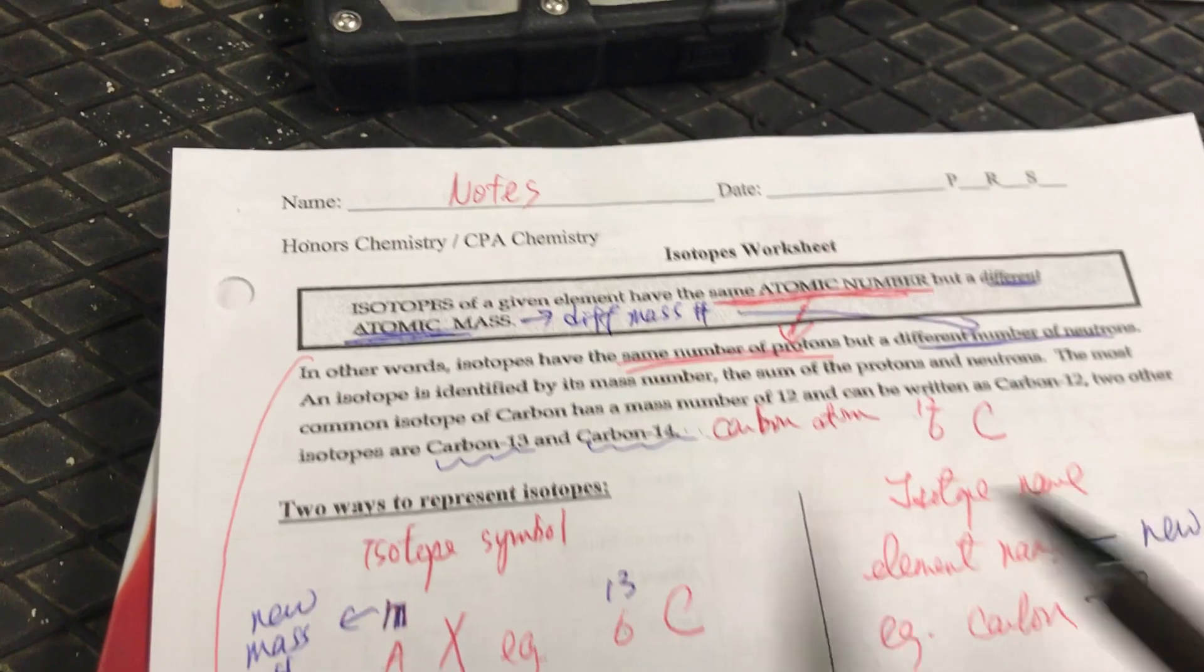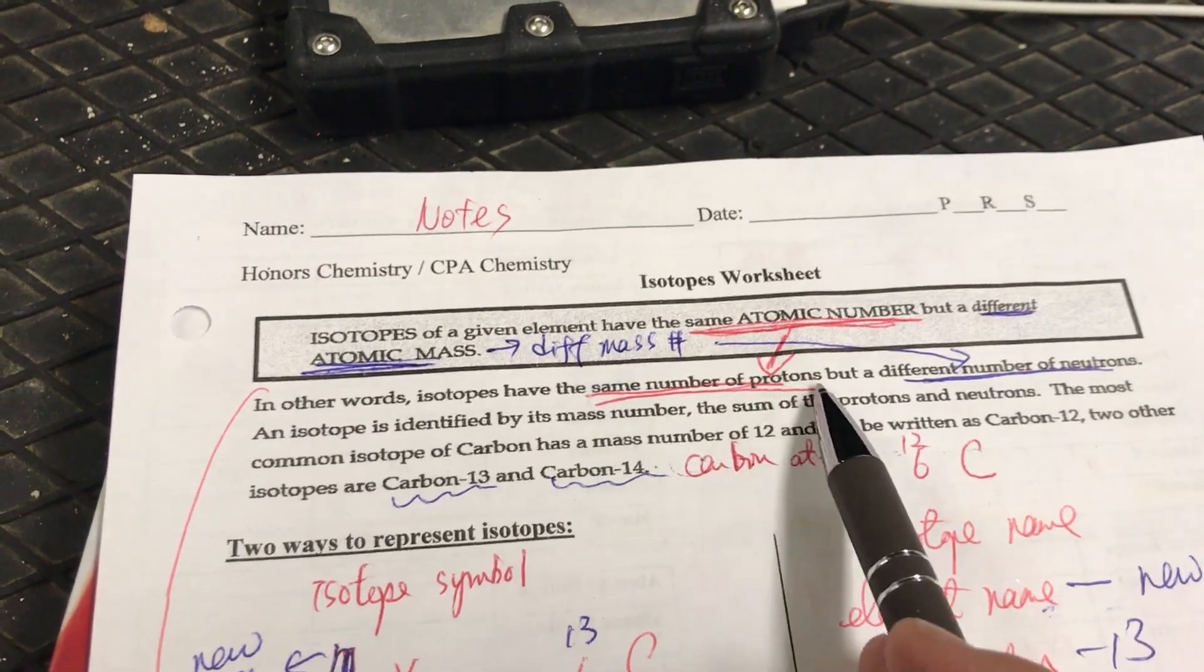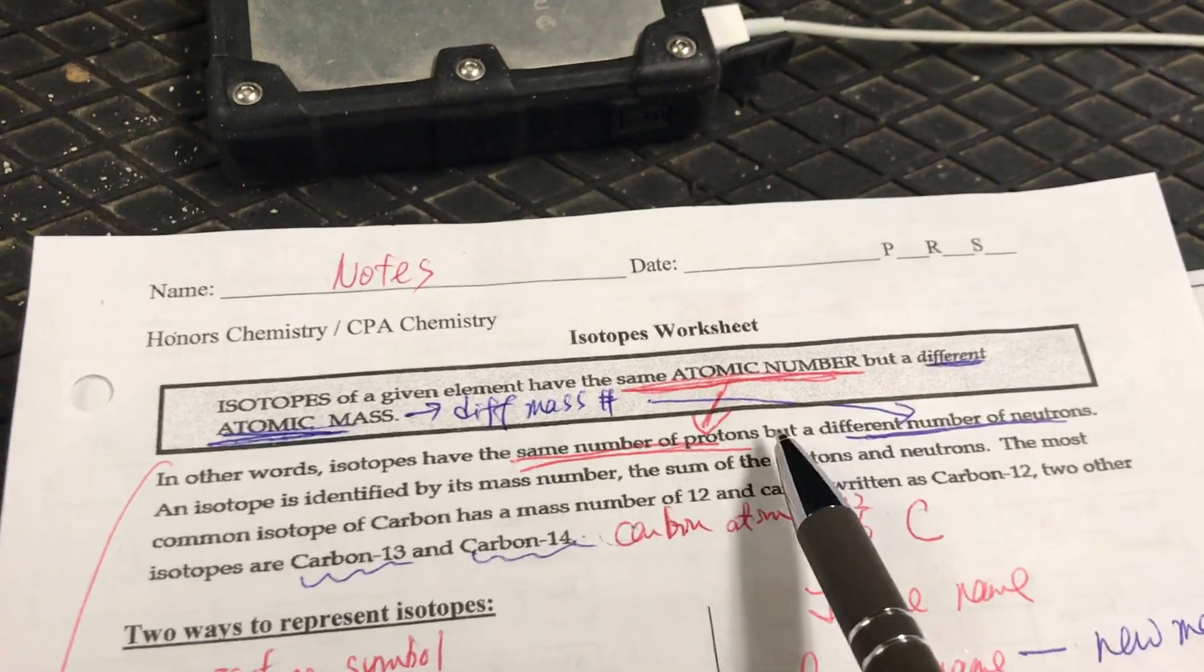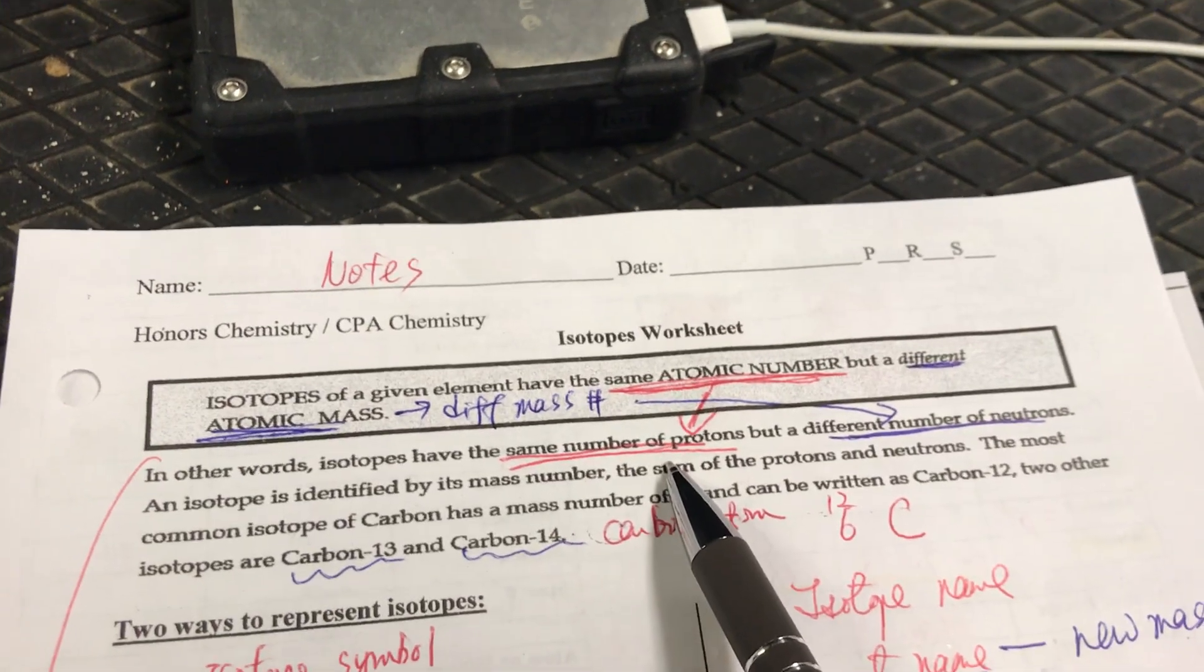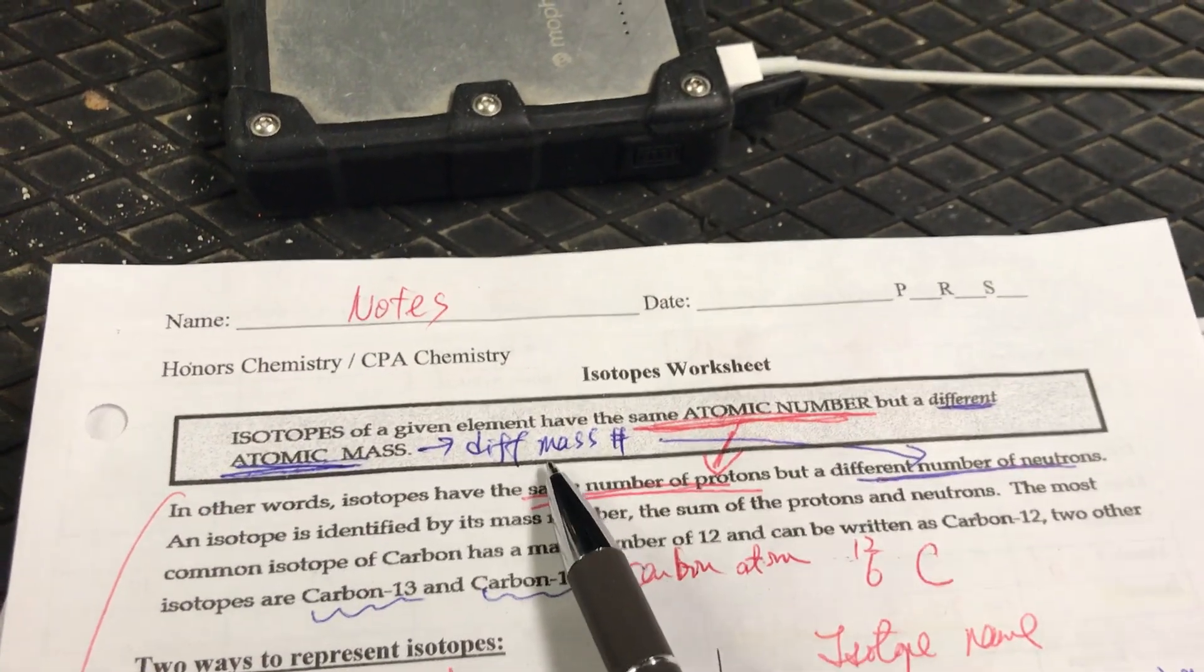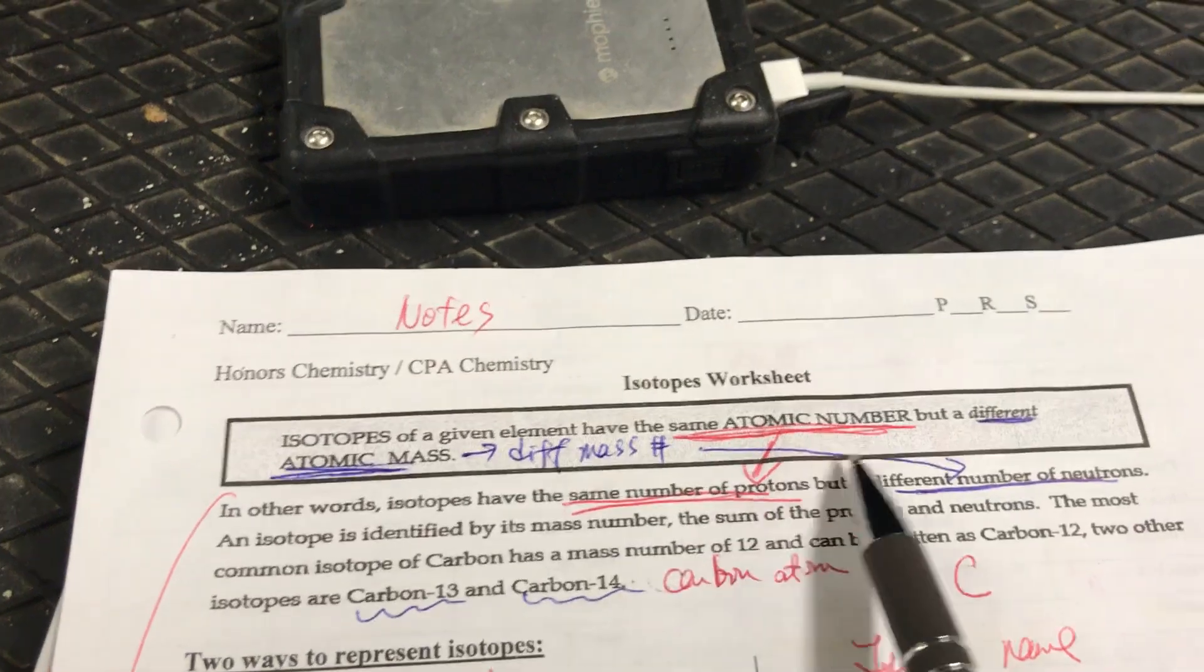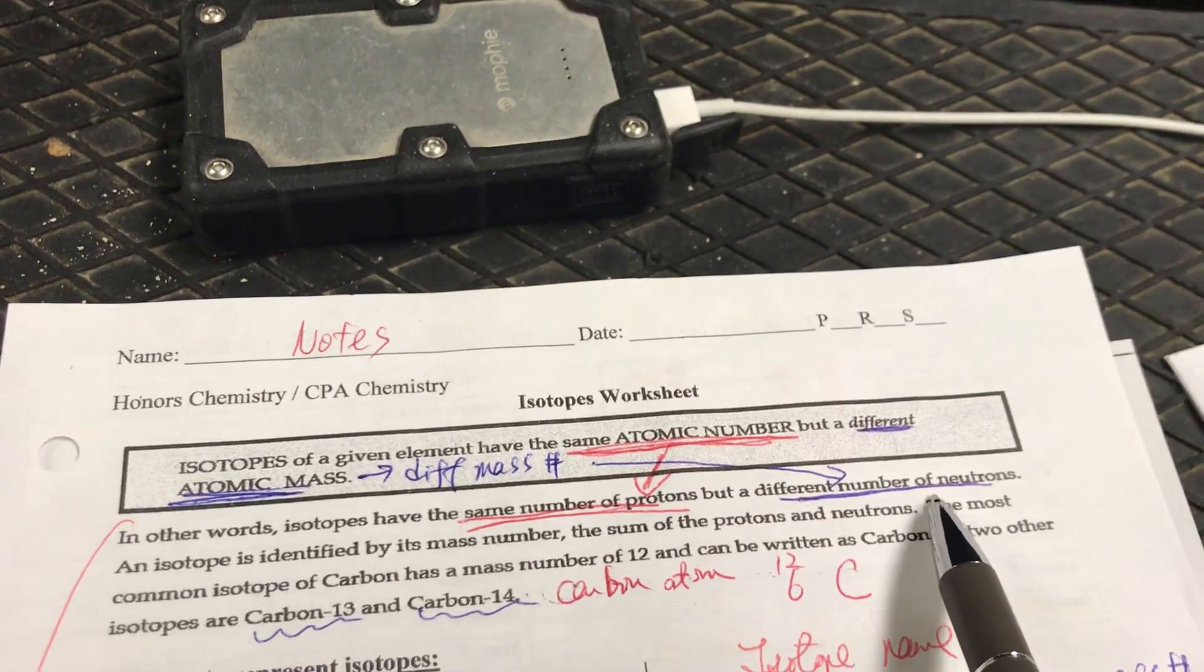So in this video I'm going to talk about isotope worksheet. Isotope is actually any element with the same atomic number, meaning same proton, but they have different atomic mass because they have different mass number due to the fact that they have different neutrons.